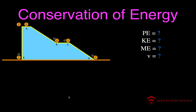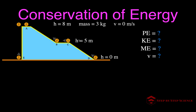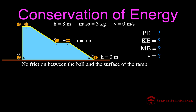Now before we do that, we need to set up the conditions. The height of the ball at A is 8 meters, the mass of the ball is 3 kilograms, and it has a velocity of zero meters per second at A — it is at rest. At points B and C the height is 5 meters, and at the bottom — points D and E — the height is zero. We'll approximate g as 10 meters per second squared to keep the math simpler.